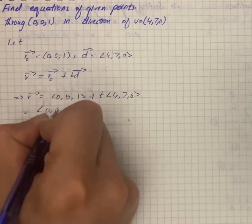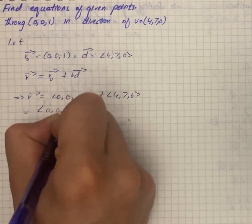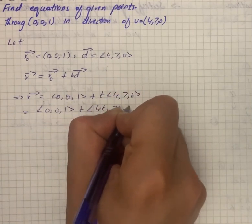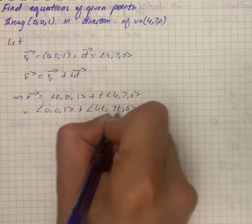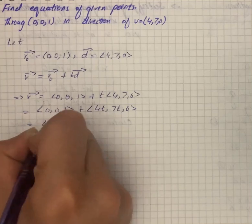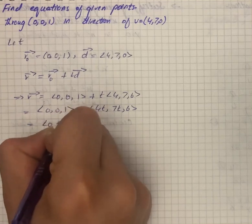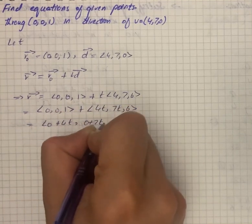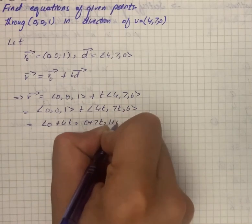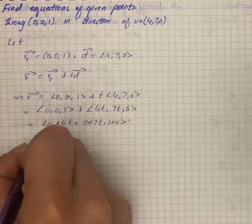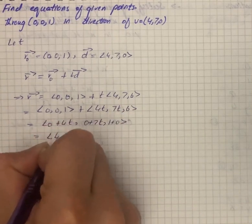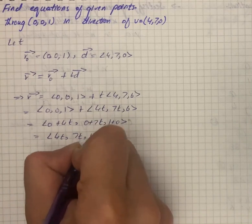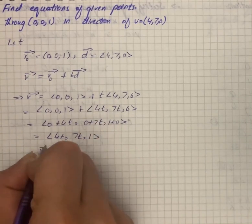Simplifying, we have (0, 0, 1) plus (4t, 7t, 0), which equals (0 + 4t, 0 + 7t, 1 + 0), giving us (4t, 7t, 1). So r vector is equal to (4t, 7t, 1).